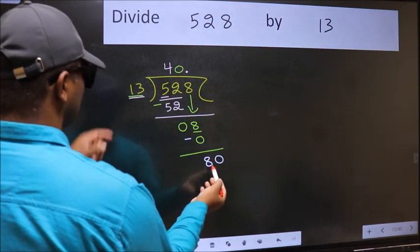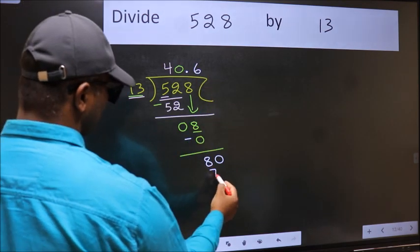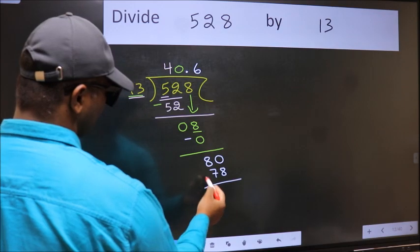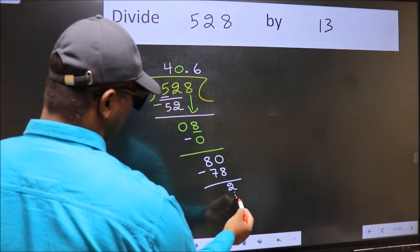A number close to 80 in 13 table is 13, 6, 78. Now we should subtract. We get 2. You continue the division. I am not doing that.